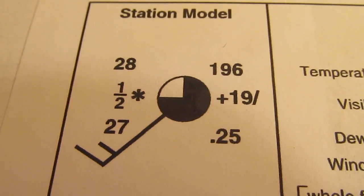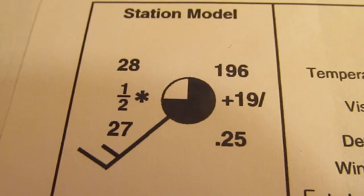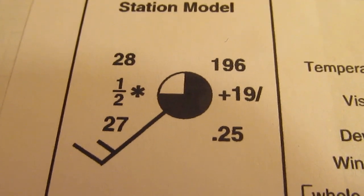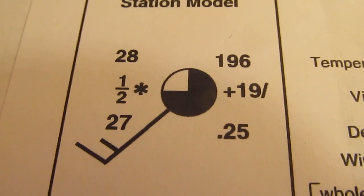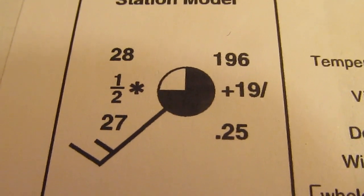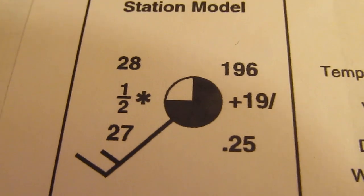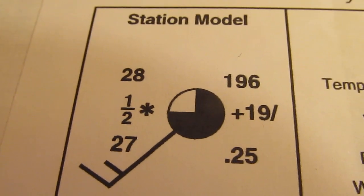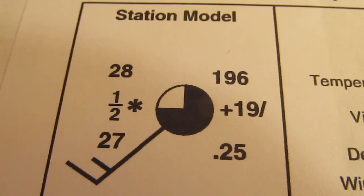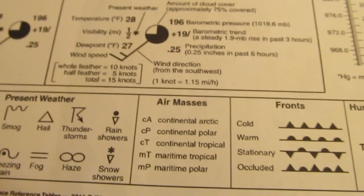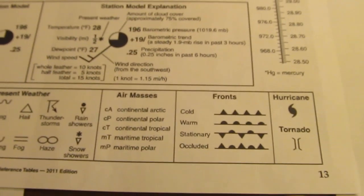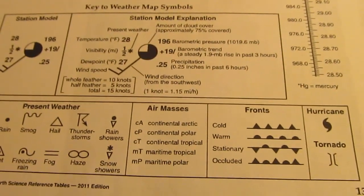So before we can really look at weather maps, we need to be able to understand the symbols printed on the weather maps that tell us what the weather is doing. So what you're looking at right here is known as a station model. You've probably seen this in the reference tables. If I back up here a little bit, you could see that this is part of page 13 in the reference tables.